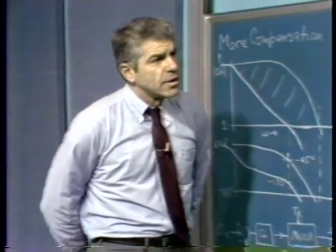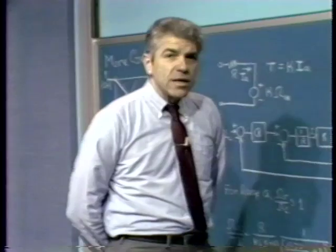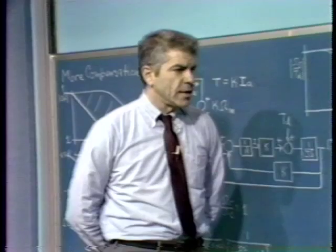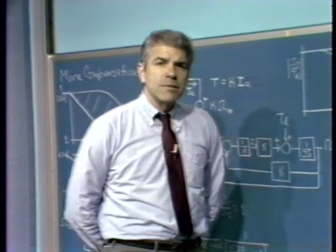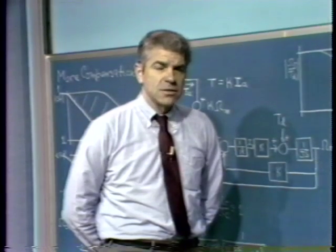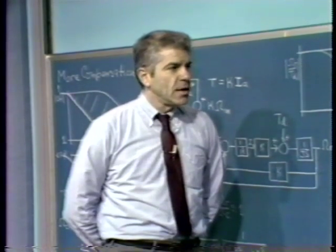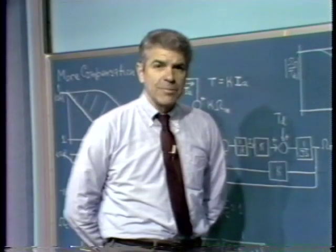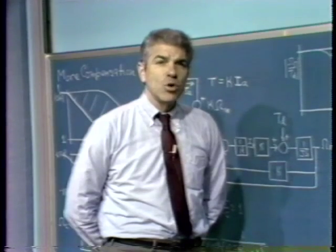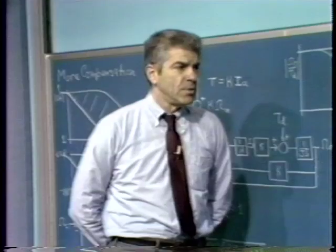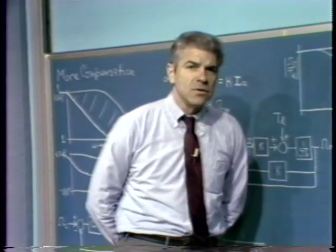Suppose we have a system where we can't tolerate the bandwidth decrease that comes with creating a dominant pole. There are other modifications we can make to the loop transmission to improve stability — ones that typically retain more desensitivity and more system bandwidth than forcing a dominant pole. Let's look at the kinds of things we might like to do.